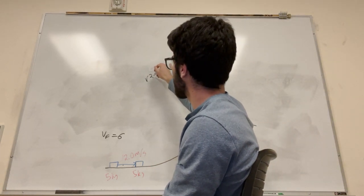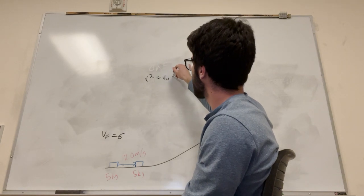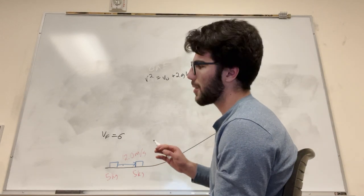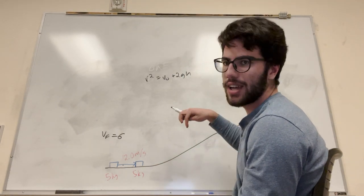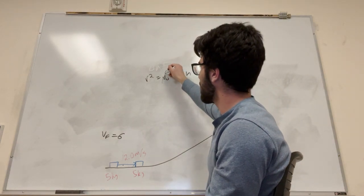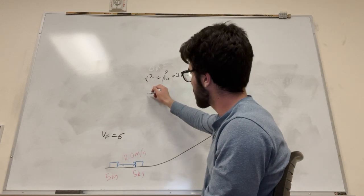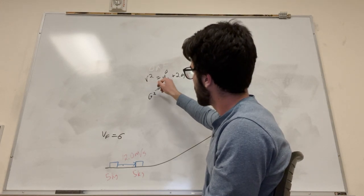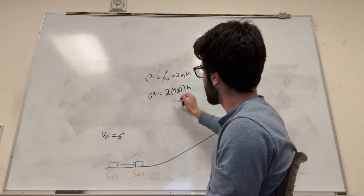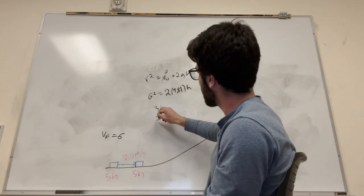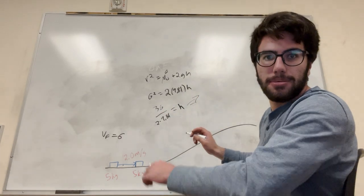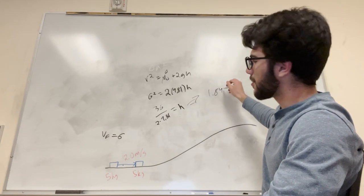So we can use the formula, velocity squared is equal to velocity initial plus two gravity height. Okay, so velocity initial, basically what I'm gonna do here is I'm gonna work backwards. I'm gonna imagine we're falling and we land at the final velocity of six just to see where the height is. So you can say our velocity initial for falling is zero. So we're gonna say six squared is equal to two times gravity 9.81 times height. So then you're just gonna divide 36 by 2 times 9.81 is equal to height and that would give you the number 1.84 meters.